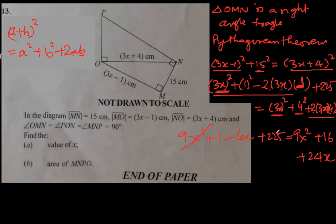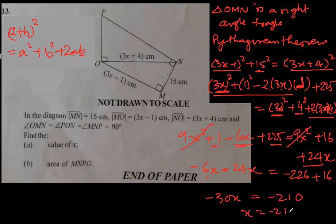9x square on this side, 9x square on this side cancel out. Let's collect 6x's on one side. So 6x minus 24x. This positive 24x when comes to the left side becomes negative. Let's bring this one and 225 to the other side. They become 226 together. Minus 226 and plus 16. So they become minus 30x equal to minus 210. So x equal to minus 210 over negative 30. Both negatives cancel out and answer is 7.